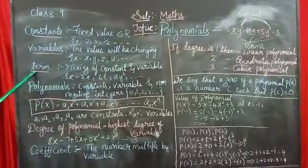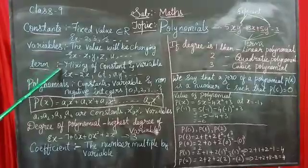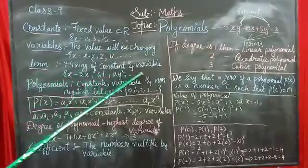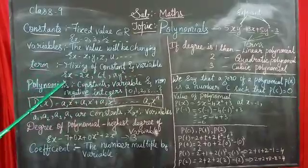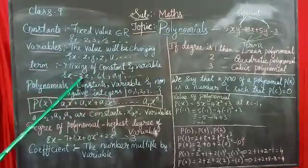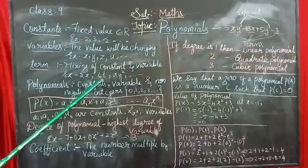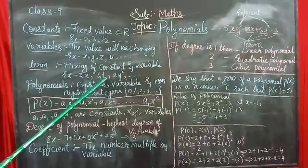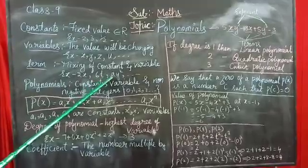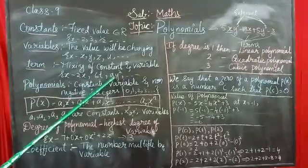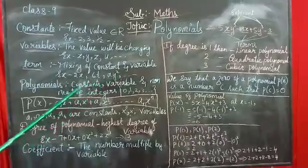The next is term. What is the meaning of term? Mixing of constants and variables is known as a term. For example, 2X — here 2 is a constant and X is a variable. Similarly, 6T — 6 is a constant, T is a variable. AY square — A is a constant, Y square is a variable.